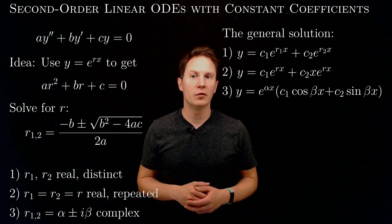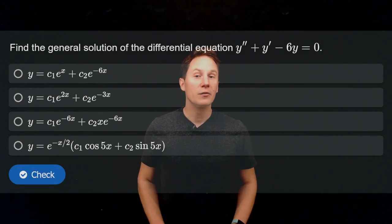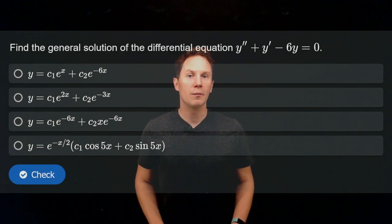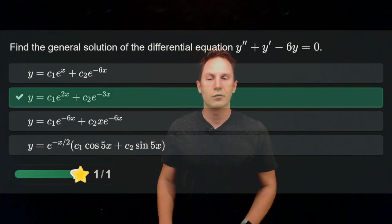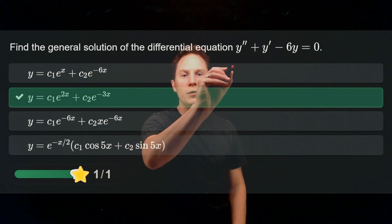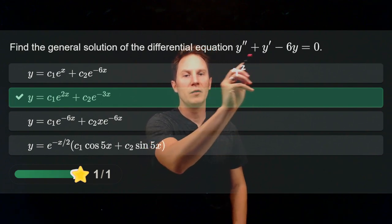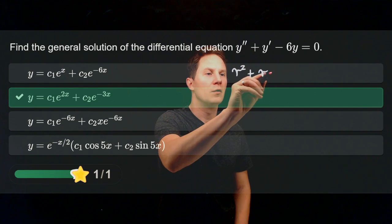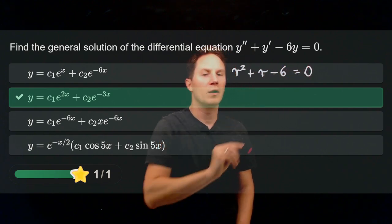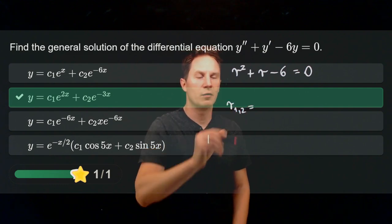Now let's solve some of these second-order linear ODEs with constant coefficients. Find the general solution of y double prime plus y prime minus 6y equals 0. The coefficients a, b, c are 1, 1, and negative 6 respectively. Therefore the auxiliary equation is r squared plus r minus 6 equals 0, to which we apply the quadratic formula.